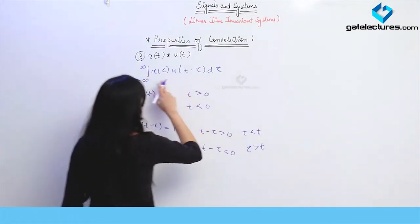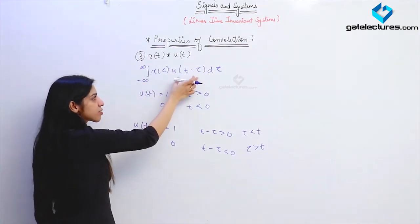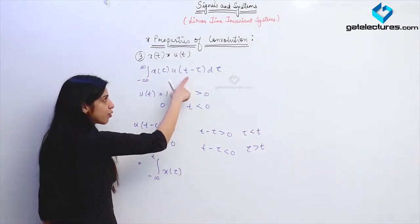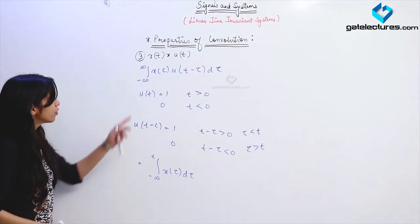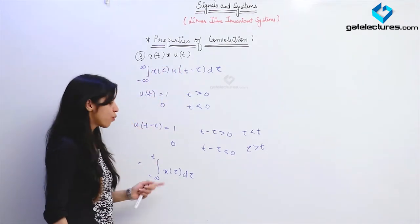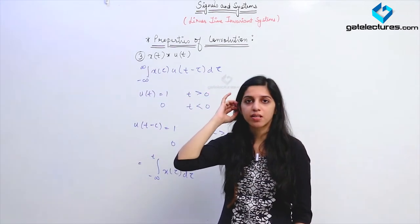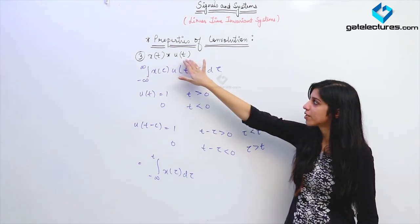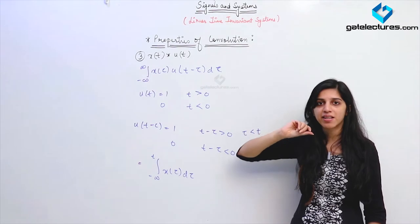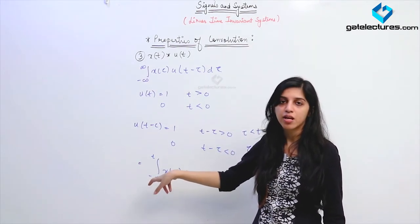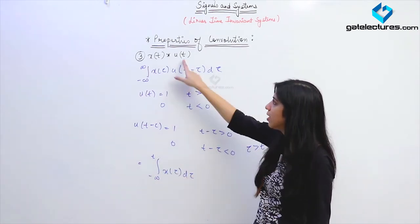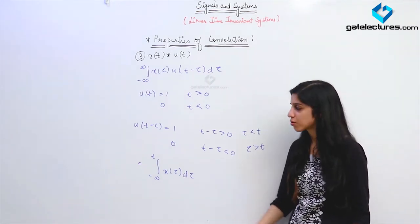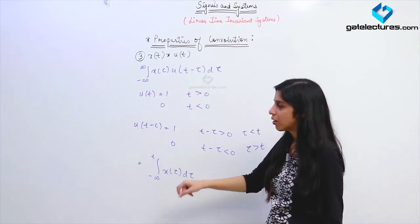So I can replace the limits with −∞ to T, and in that interval the function U(T−τ) has value 1. The integral becomes ∫from −∞ to T X(τ)dτ. Therefore, convoluting a signal with the unit step signal integrates the signal. In other words, any system whose impulse response is a unit step signal is going to be an integrator.